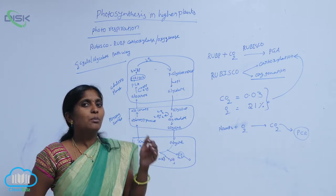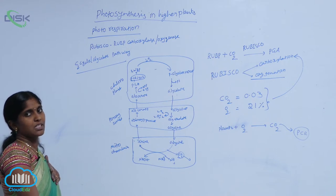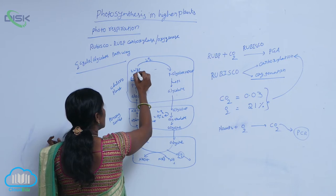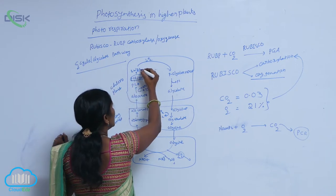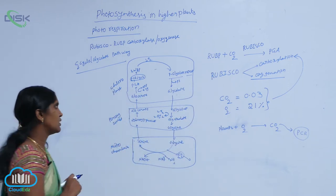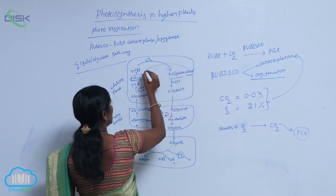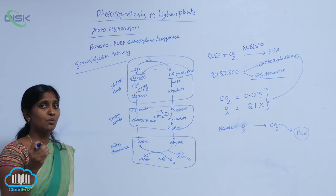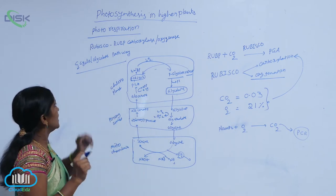When oxygen availability is more, Rubisco becomes involved in photorespiration. The first step of the C2 cycle happens in the chloroplast. Normally, RuBP is involved in the PCR cycle, but as an exception, when oxygen concentration is more, RuBP reacts with oxygen to produce phosphoglycolate and 2-PGA. The 2-PGA is again involved in the C3 cycle, while phosphoglycolate, by losing one phosphate, turns into glycolate — the first stable compound formed in the C2 cycle.